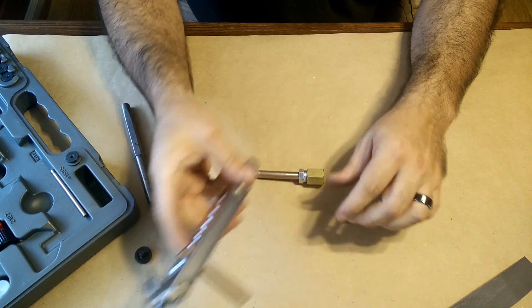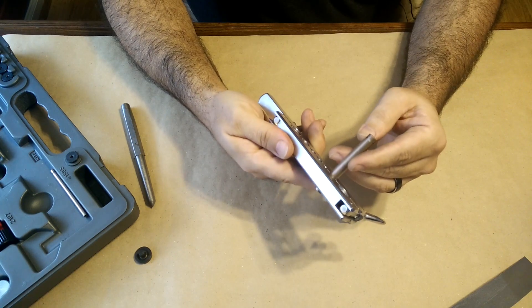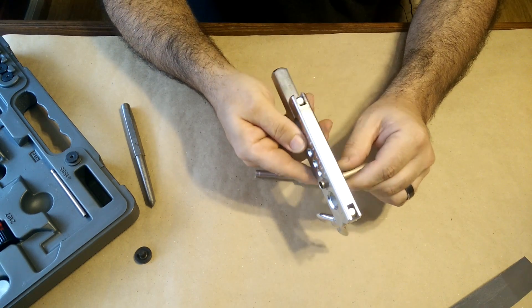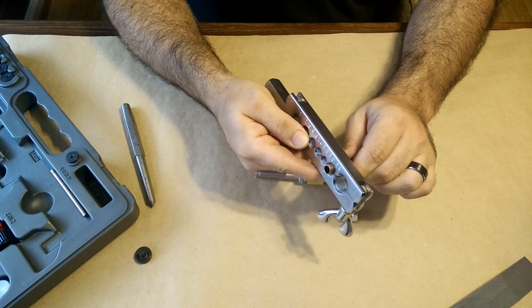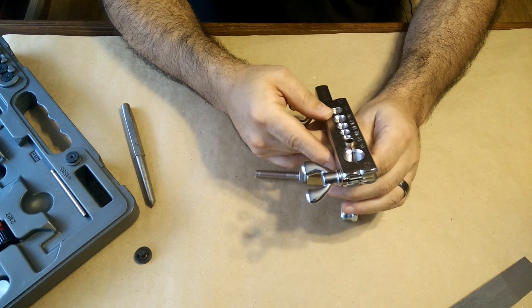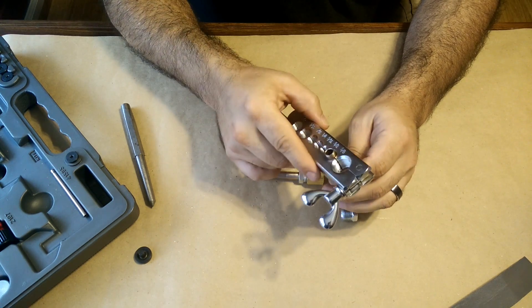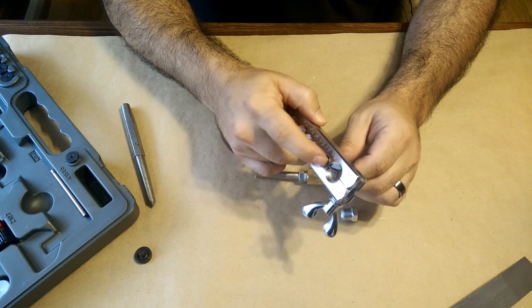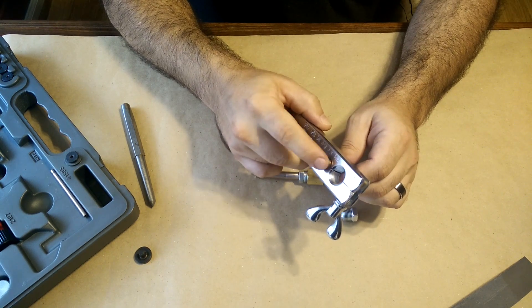Now this isn't a video necessarily on how to flare lines, but here I wanted to give you a couple of pointers on how you would go about making a double flare. The first thing is you really want to, after you make the cut on the tubing, you want to deburr.